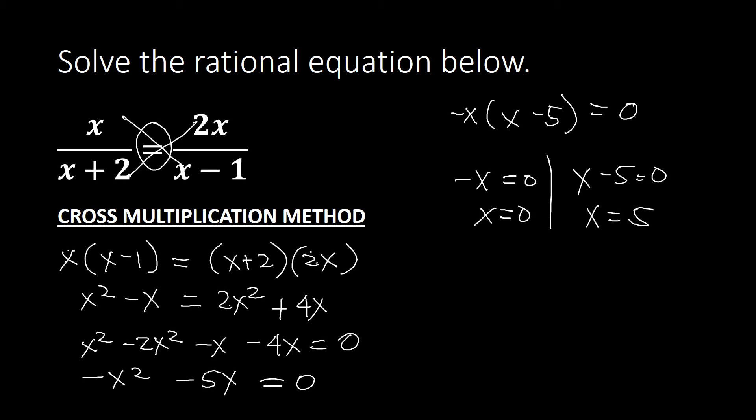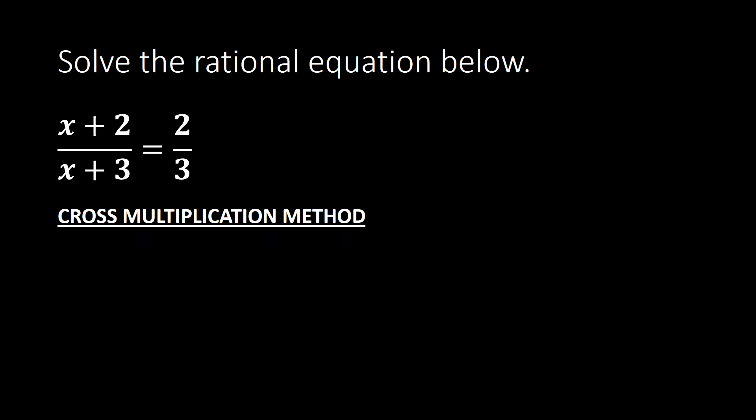Next, we have another example here. We have x plus 2 over x plus 3 equal to 2 thirds. So we can just go ahead and do the cross multiplication. So we have here x plus 2 times 3, that will be equal to x plus 3 times 2.